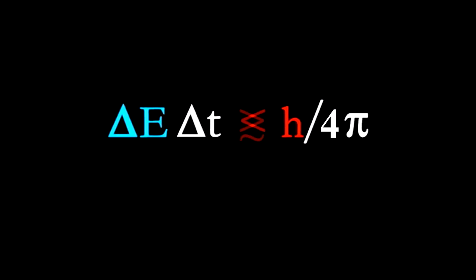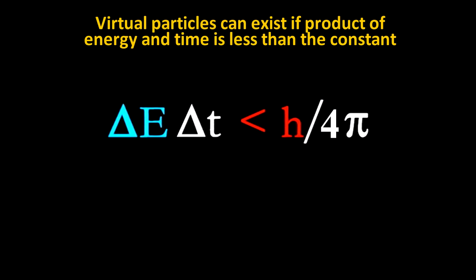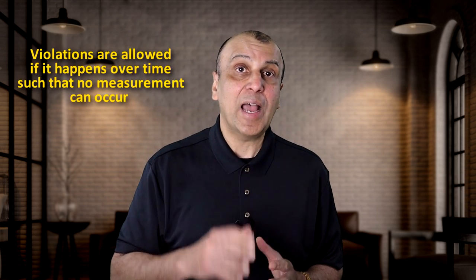In other words, if you know very precisely the energy of a system, then you can't know the time over which you made that measurement very well, or vice versa. You can know the time very well, but not the energy. But what this equation also tells you is that you can get particles with an energy delta E, and if it occurs over a very short period of time delta T, such that the product of the two is less than Planck's constant over 4 pi. That is, particles can exist that violate this uncertainty principle. How is this possible? Well this is one of the crazy things about quantum mechanics. Violations are allowed.